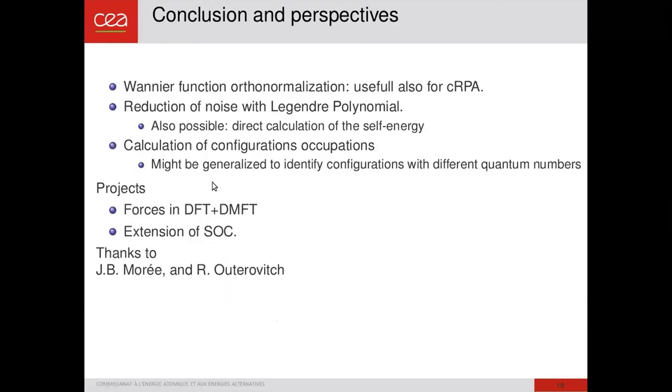So to conclude, I have presented some technical details about Wannier function orthonormalization, which are, however, useful. A way to reduce the noise with Legendre polynomials. I have also tried to implement, but it's in progress, direct calculation of the self-energy in quantum Monte Carlo. In this case, the noise is also much reduced because we don't have to use the Dyson equation to recover the self-energy. And I also presented the calculation of configuration occupations that might be generalized to identify configurations with different quantum numbers.